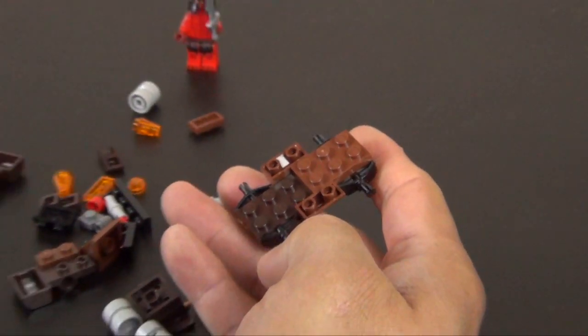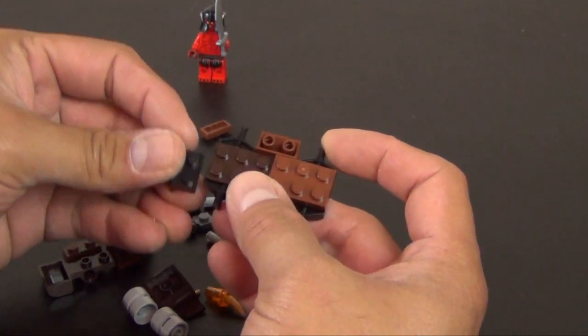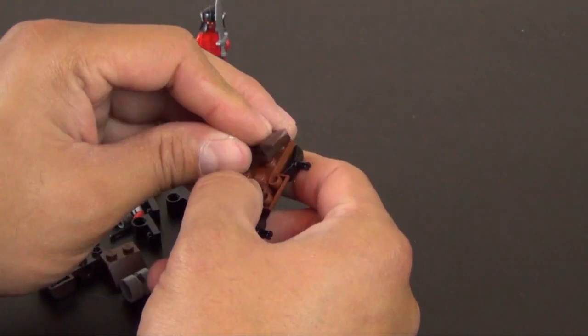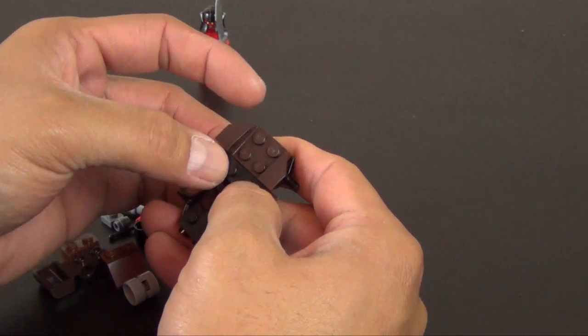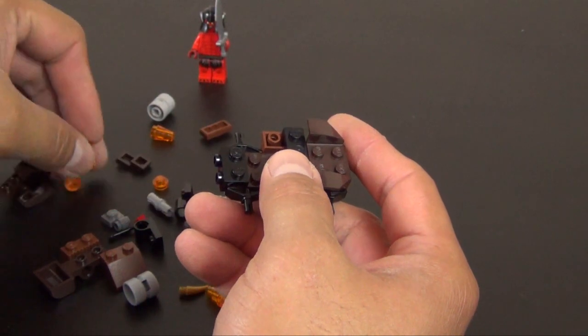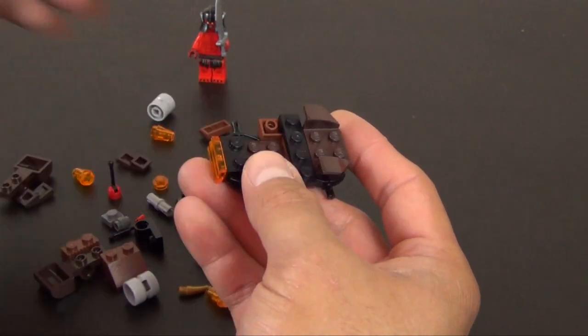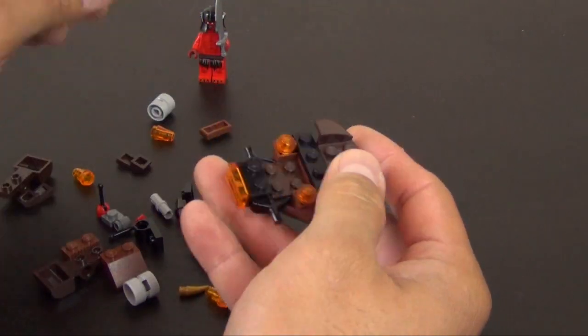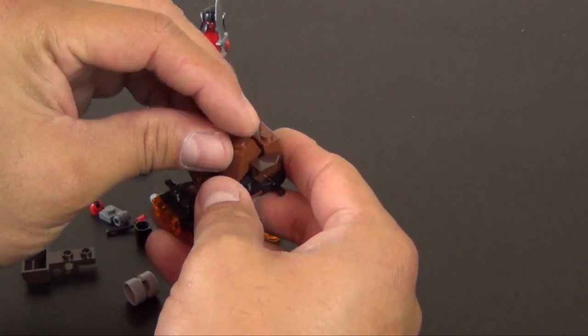Alright, so this is going to be the Slinger portion of the build. And this plate that goes there. We have the trans orange slotted tile on the front. Trans orange stud. Sloped bricks.